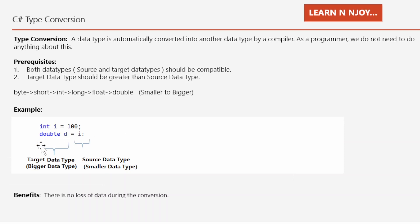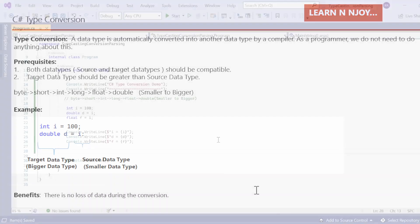For example, if we write 'int i = 100' and then 'double d = i', the double is the target data type and i holds an int value. We are trying to assign a smaller type to a bigger type, so the double can easily accommodate the int value. There is also no loss of data during the conversion because the bigger data type can easily accommodate the smaller data type value.